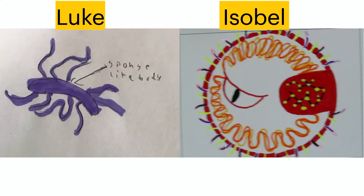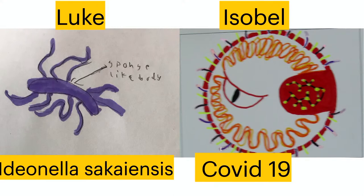Luke and Isabel submitted theirs — fabulous artwork. Definitely a virus for Isabel with a sponge-like body. For Luke, I'm going to guess salmonella, which has lots of flagella. For Isabel, I'm going to guess COVID. Half right. Luke's was Idionella sakanensis — a plastic-eating bacteria. So it's 'most wanted' in the sense that we actually want that one. Luke's submission was a desirable option we really do want. I love Isabel's artwork.